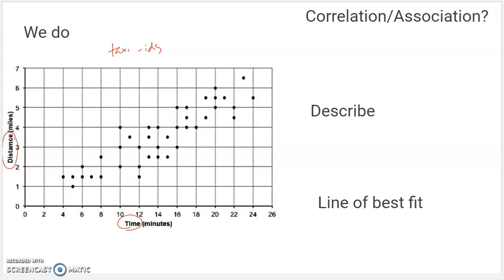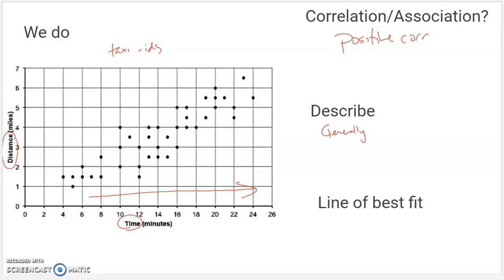Looks to me generally positive. More time meant more distance, generally. Notice it's not perfect — this was a longer ride in time than this one, but shorter in distance than this one. It's not perfect in statistics, but it's roughly or generally speaking. So I would say this is a positive correlation. That means generally speaking, farther rides take longer — or more time correlates with more distance. Which makes sense to us as well.